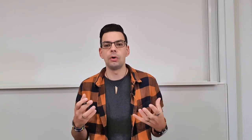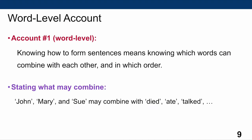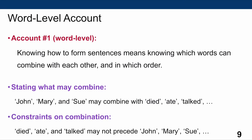Perhaps the simplest kind of account is what we call the word-level account. The story goes: knowing how to form sentences means knowing which words can combine with each other and in which order. We need two statements. First, we state what may combine — for example, John, Mary, and Sue may combine with 'died,' 'ate,' and 'talked.' Then we state constraints — 'died,' 'ate,' and 'talked' may not precede John, Mary, and Sue, since verbs in English must be preceded by a noun.